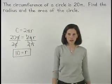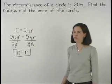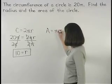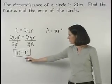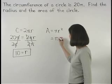Now to find the area of the circle, remember that the formula for the area of a circle is pi r squared. And since the radius of our circle is 10, we have pi times 10 squared,